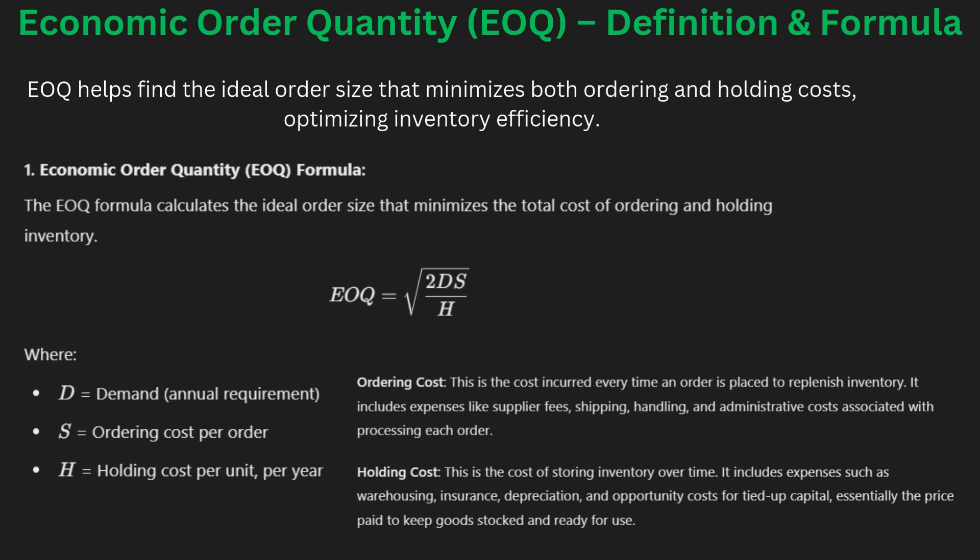This formula helps businesses avoid frequent orders, which saves on ordering expenses, and also reduces the cost of storing large amounts of materials. EOQ is especially useful for businesses that need to restock frequently. It takes into account the demand rate, ordering cost, and storage cost, keeping inventory cost as low as possible while meeting production needs.